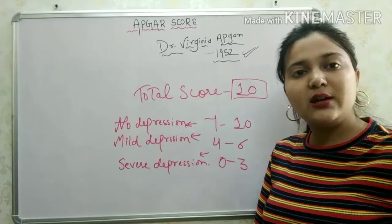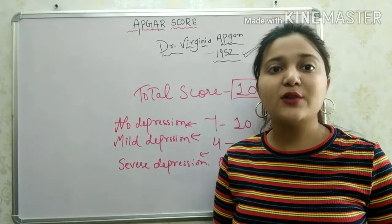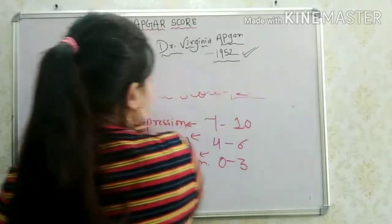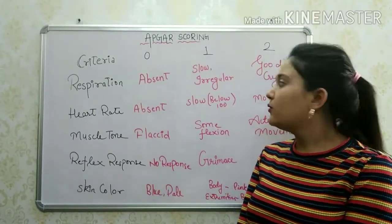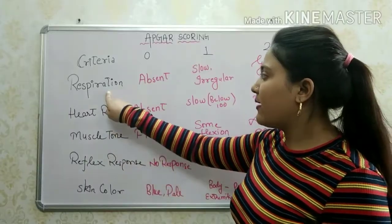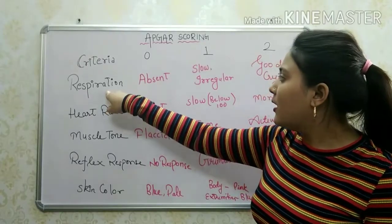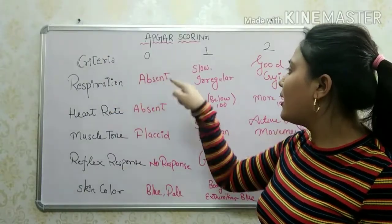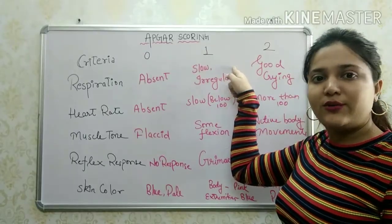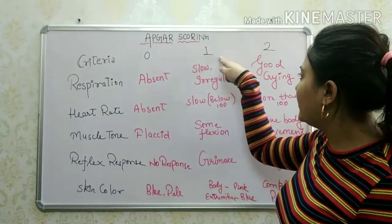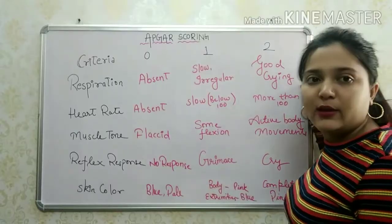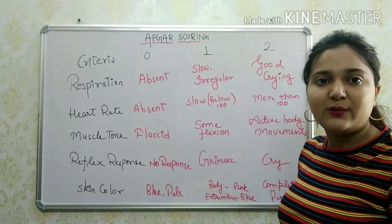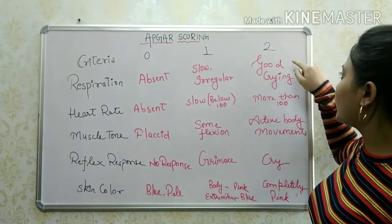Now let's see how we calculate the score for each criterion. For respiration: if respiration is absent, we score 0. If respiration is slow and irregular, we score 1. If respiration is satisfactory, we score 2.